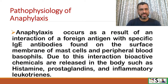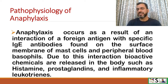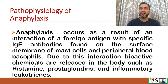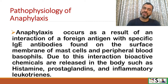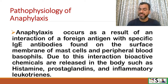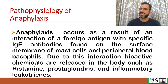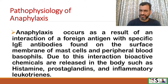Pathophysiology of anaphylaxis means what actually happens in our body during anaphylaxis. Anaphylaxis occurs as a result of an interaction of a foreign antigen with specific IgE antibodies found on the surface of membranes of mast cells and peripheral blood basophils. Due to this interaction, bioactive chemicals are released in the body, such as histamine, prostaglandins, and inflammatory leukotrienes.